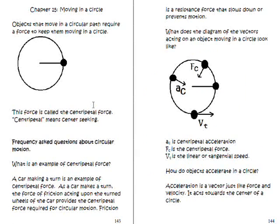Here's some conceptual things about objects moving in a circle. One is there's a force required for this object to stay in a circle and they call this a centripetal force. It means center seeking. An example of centripetal force would be a car making a turn. As a car makes a turn, the force of friction acting upon the turn wheels of the car provides the centripetal force required for circular motion.